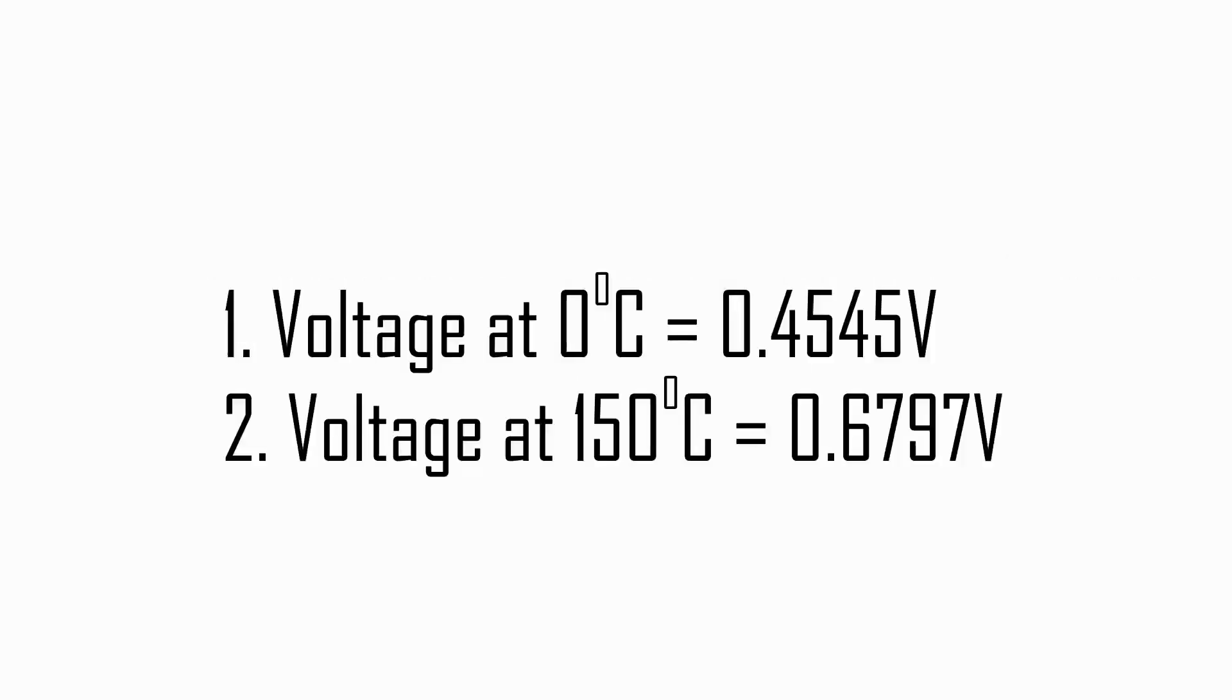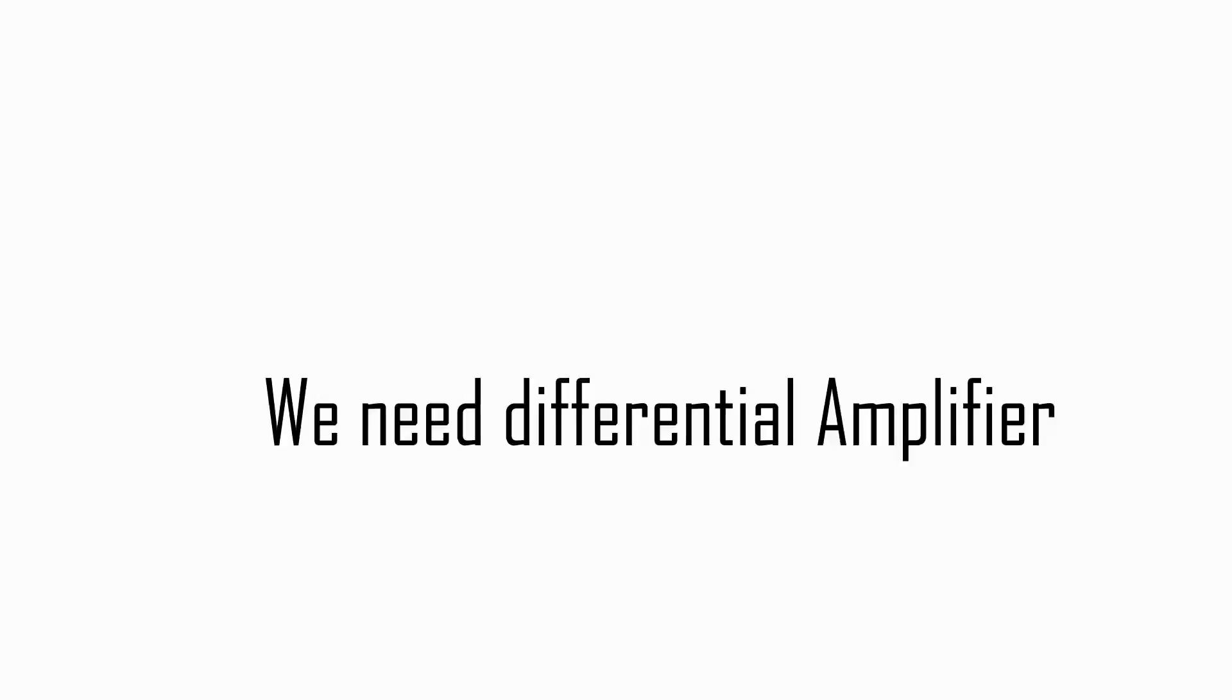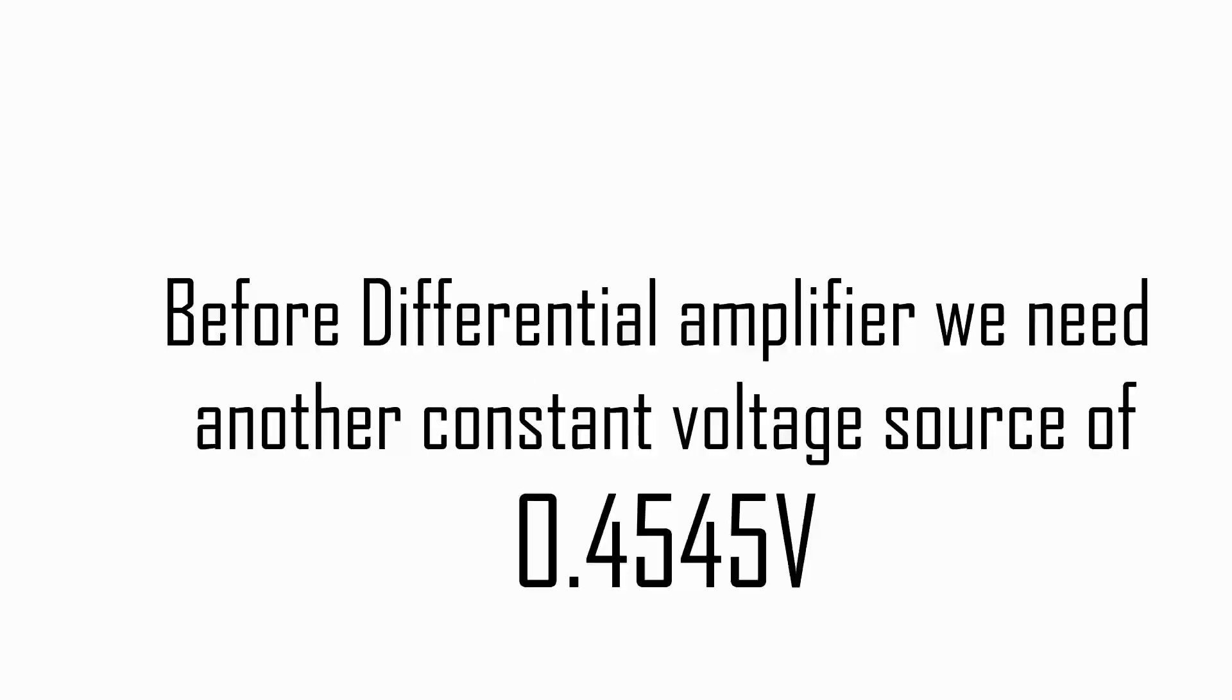Now, this thermometer is designed to measure 0 degree Celsius to 150 degree Celsius. So it must not respond below 0 degree Celsius and higher than 150 degree Celsius. The voltage at 0 degree Celsius is 0.4545 voltage. So we need to subtract this voltage in order to get 0 volt at 0 degree Celsius. For this purpose, we need differential amplifier. But before that, we need another constant 0.4545 voltage source in order to cancel out voltage at 0 degree Celsius.